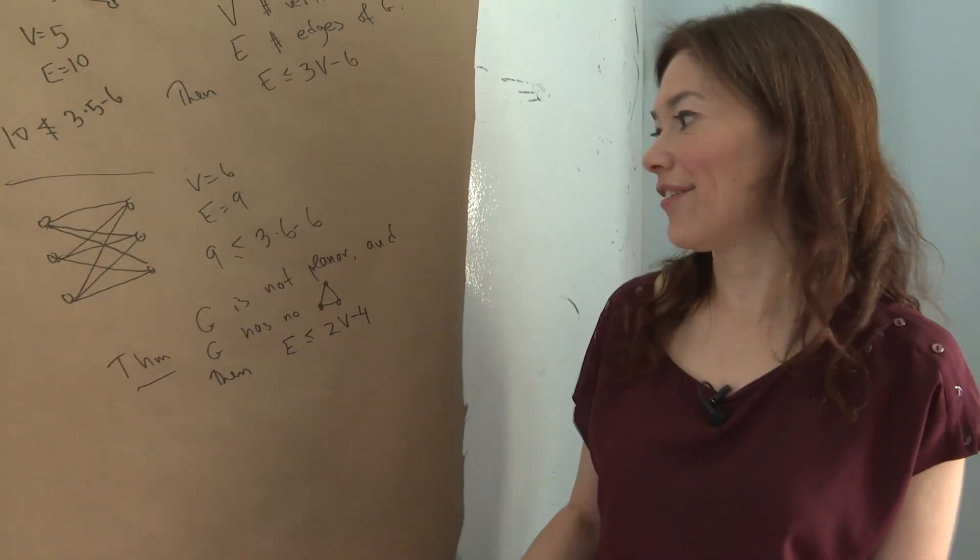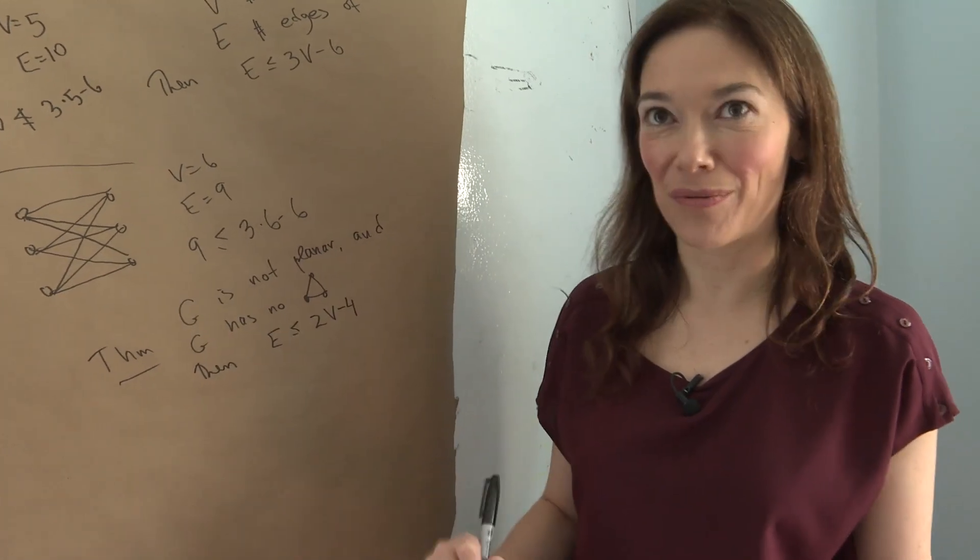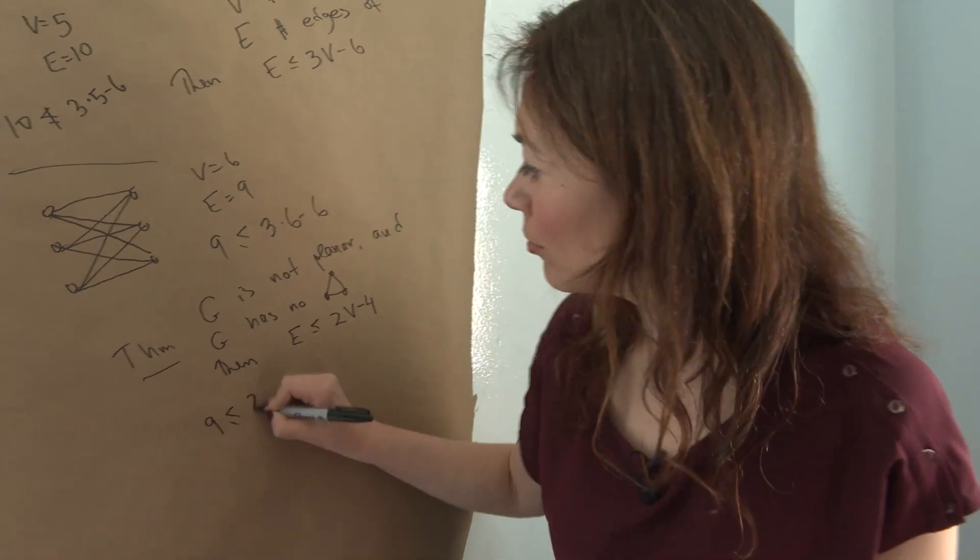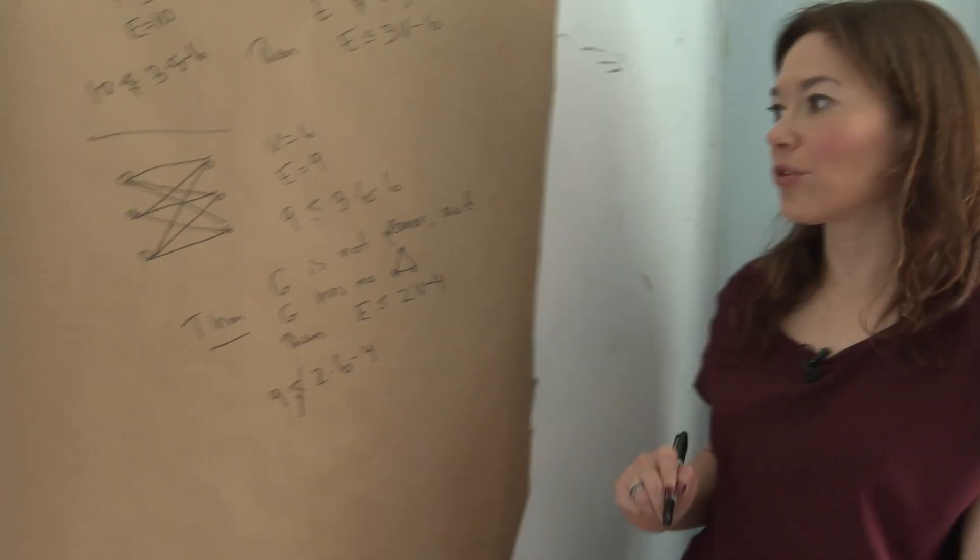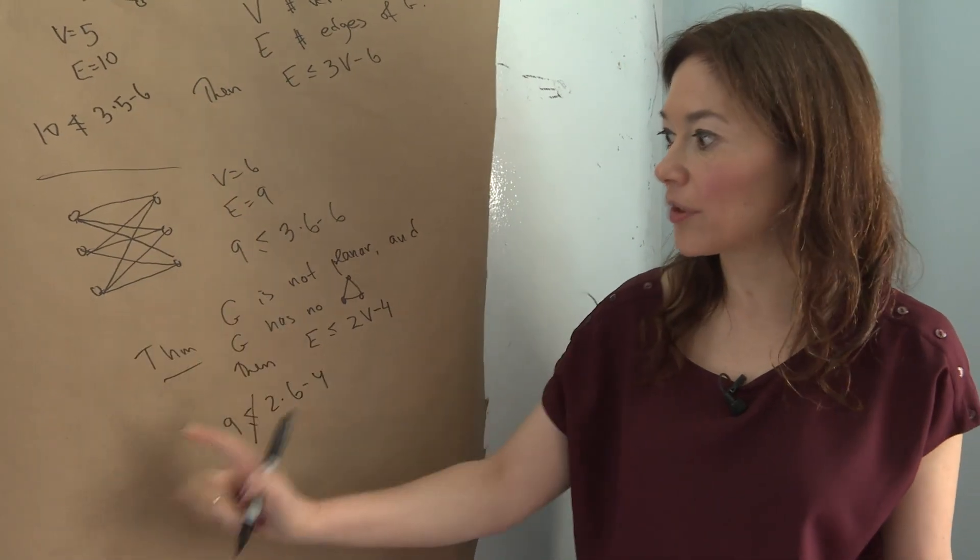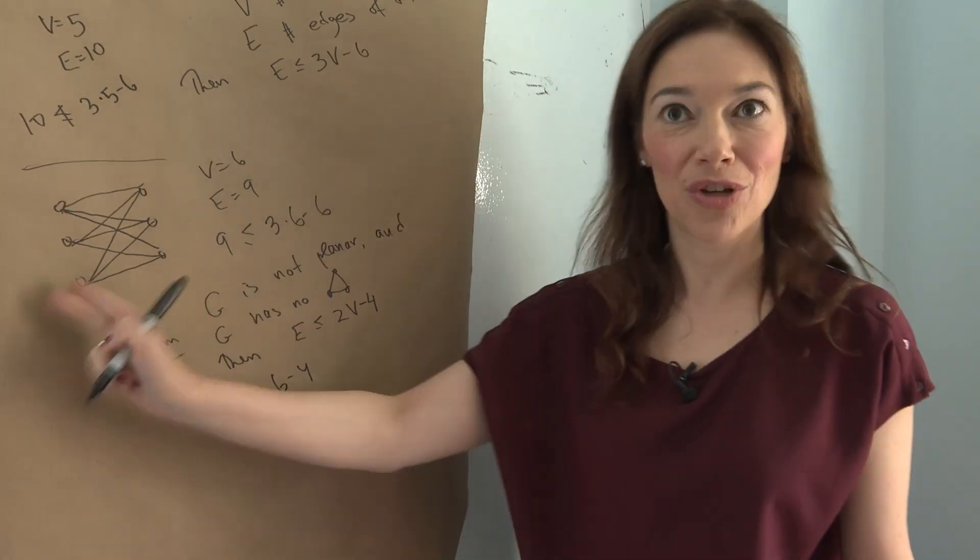And then, so first of all, let's check that this is going to be helpful. So E is 9, 2 times 6 minus 4 is not at least 9. That's a good start. Now we just need to convince ourselves that we can use this theorem to test this graph.